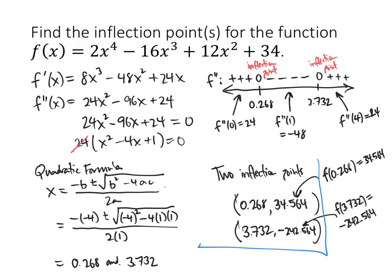And so that is my solution. Just to recap, the process for finding inflection points is: set f double prime equal to 0 and solve. Whatever solutions you get are potential inflection points. Draw a number line and plug in in-between values to see whether f double prime actually changes sign — wherever it did, those are inflection points. To find the y-coordinate, plug into the original function f.